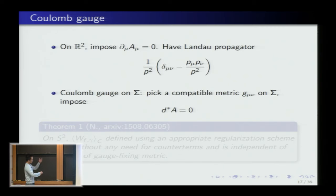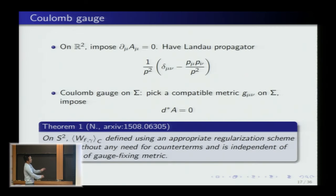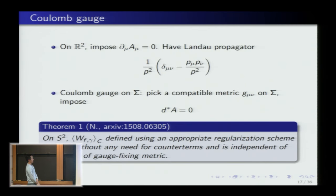The first result, from a paper last summer: on S², if I take Wilson loop expectations in Coulomb gauge — using the Feynman rules generated from this gauge fixing, with appropriate regularization — then as the cutoff is removed, I don't need any counterterms. The theory is UV-finite. Moreover, this expectation value is independent of the choice of metric used to define Coulomb gauge.